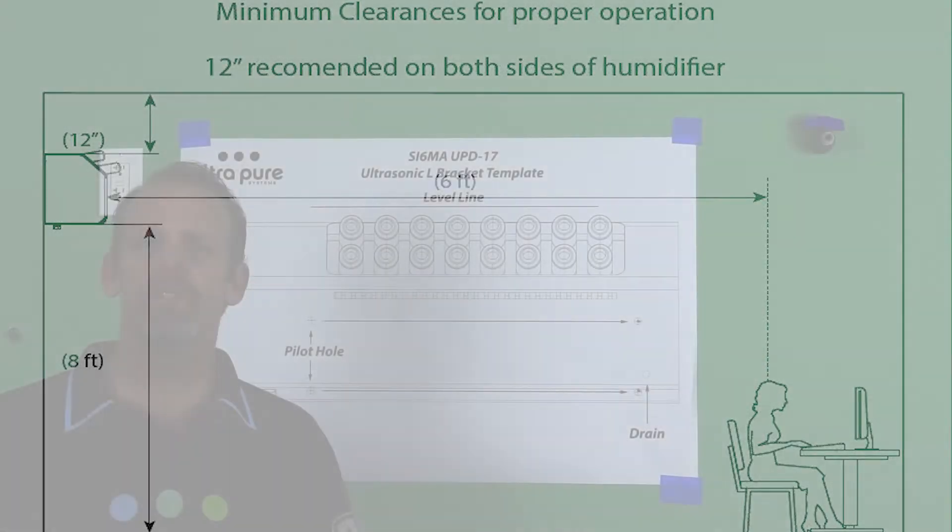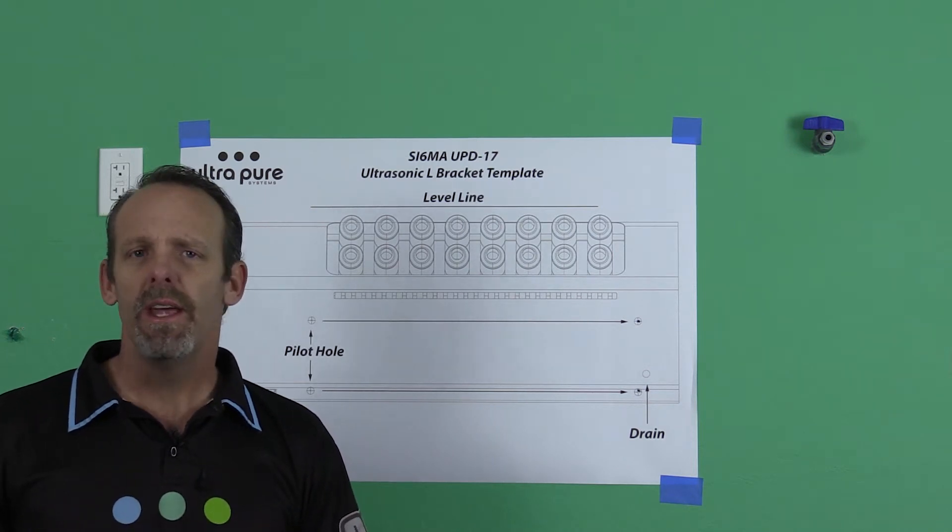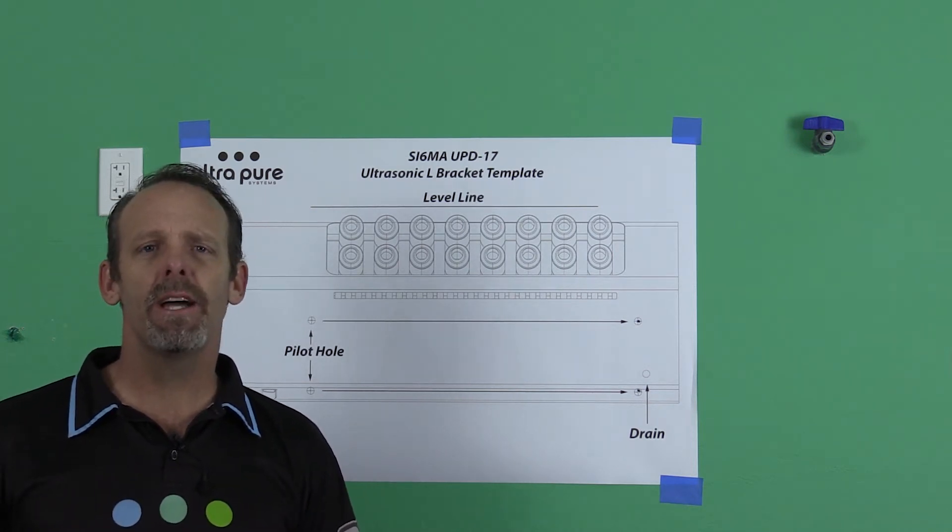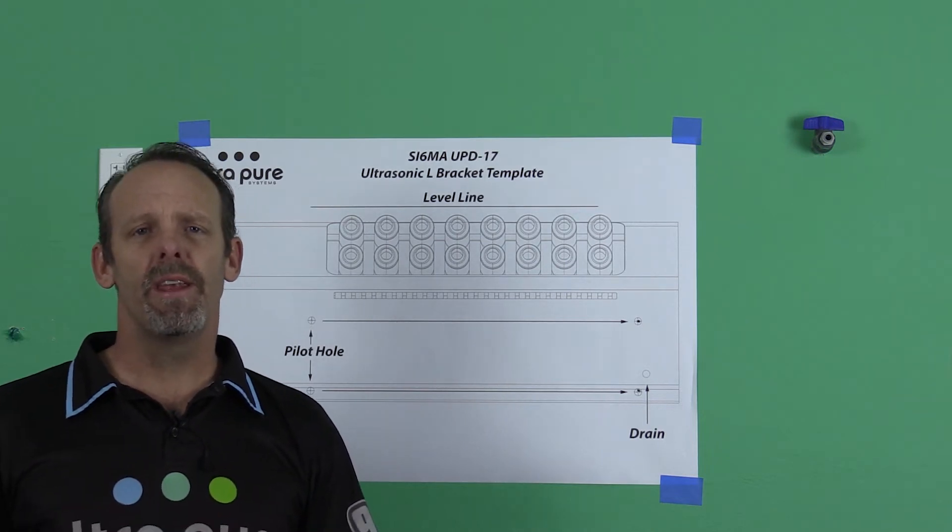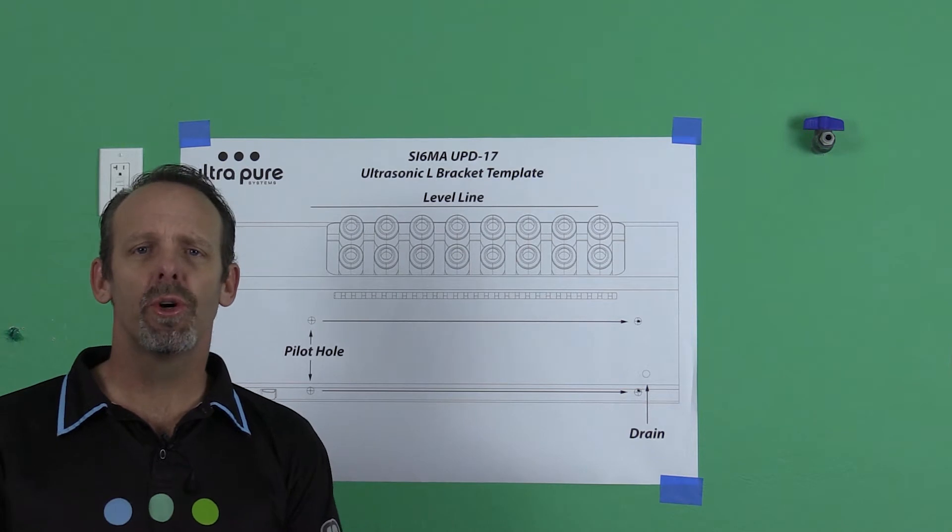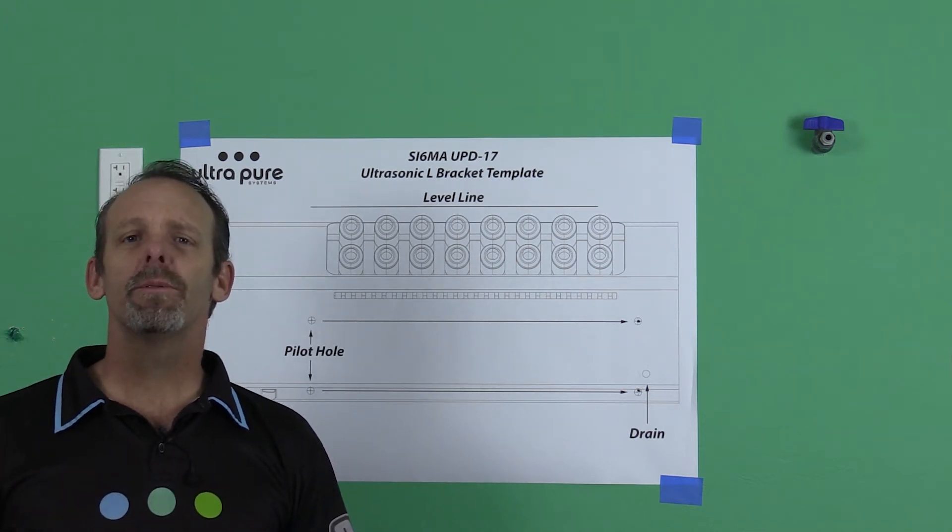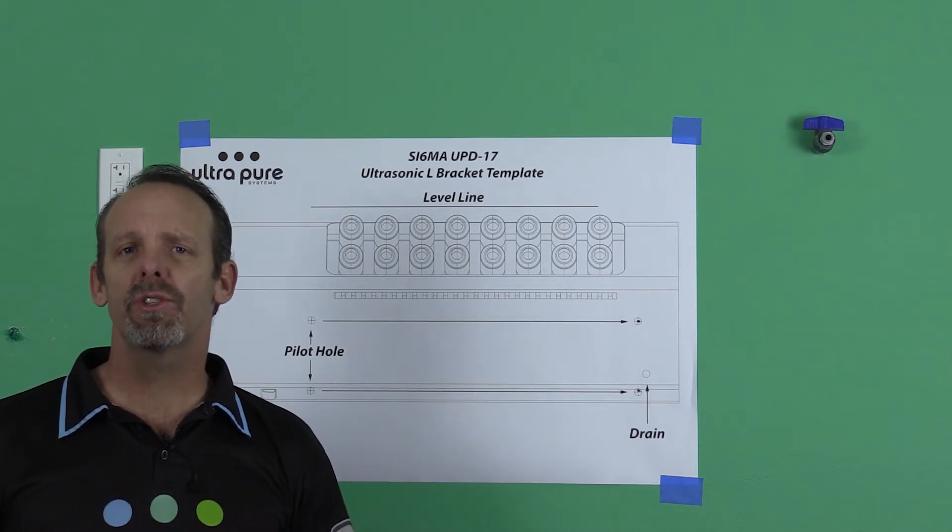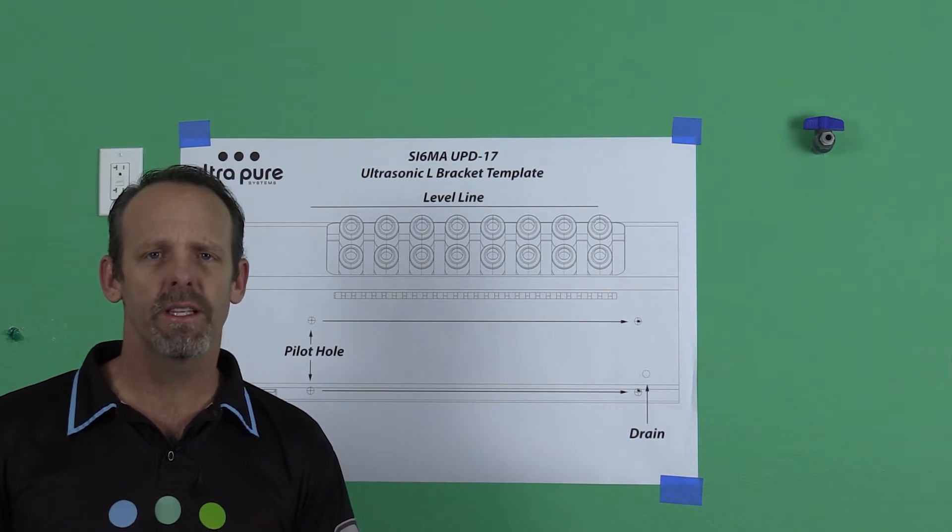One of the things we talk to our technicians about is drawing an imaginary box during the installation, and nothing can be in that imaginary box. That way, you could be confident that the mist is going to get absorbed into the airstream. One of the problems that we have found in the installation phase is the guys installing it just don't know that. And it's a very important part of installation.